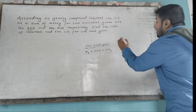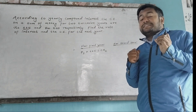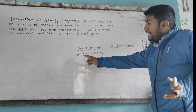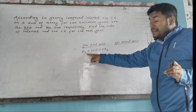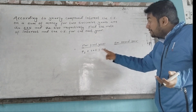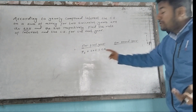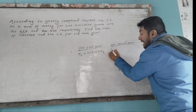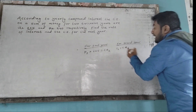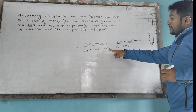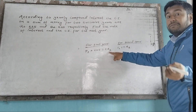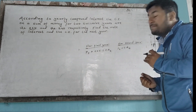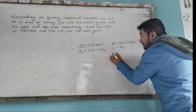The principal for the second year is the amount from the first year, which becomes the new principal. So for the second year, the amount A1 becomes the principal, and the compound interest for the second year is Rs. 240.